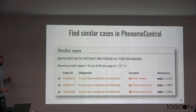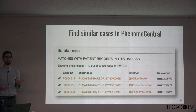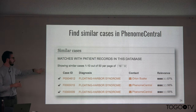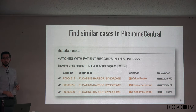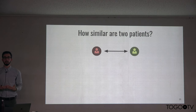Within Phenome Central, built on top of Phenotips with additional functionality focused on finding similar cases, if you have described your patient's phenotype and added any genes of interest, you can immediately see within the patient form other cases in that database that are similar based on a relevance score. They are ordered by relevance score and you can expand and view what is similar in terms of phenotype and genetics, and potentially contact the owner of that other record. The Human Phenotype Ontology makes this process of finding similar patients very easy.